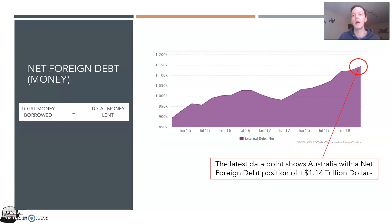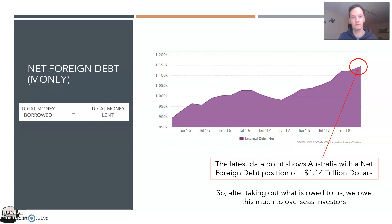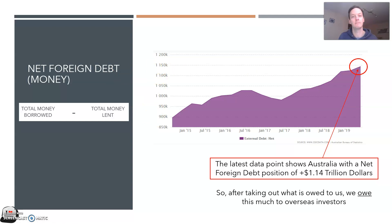Our latest data shows Australia has a net foreign debt position of positive $1.14 trillion. As we said, if it's a positive number, the total money borrowed has to be bigger than total money lent. As a result, we owe more money than we are owed — we have borrowed more money than we have lent to overseas countries. It's a positive number because it reflects how much debt we have; we owe other countries this much money.